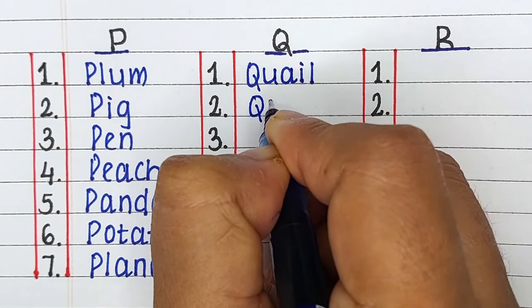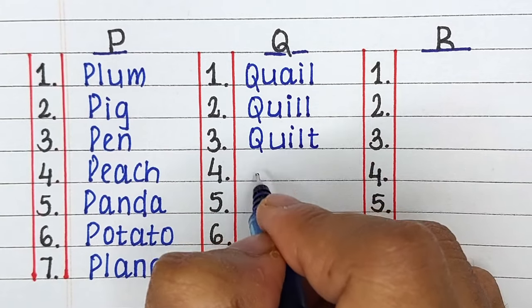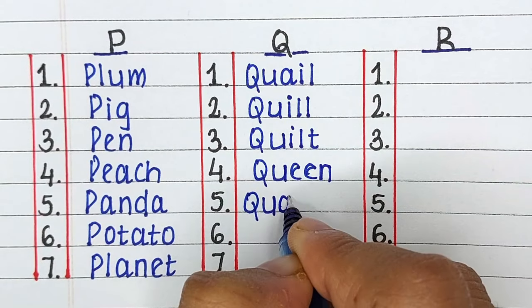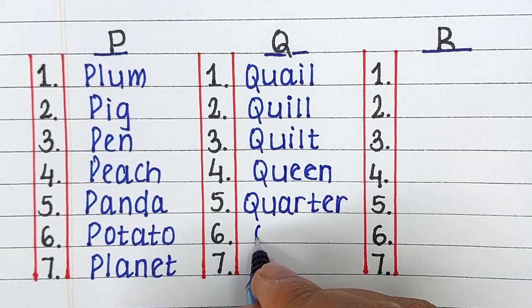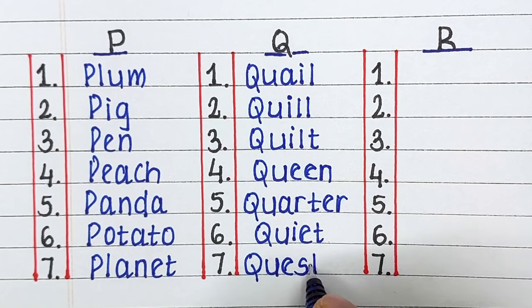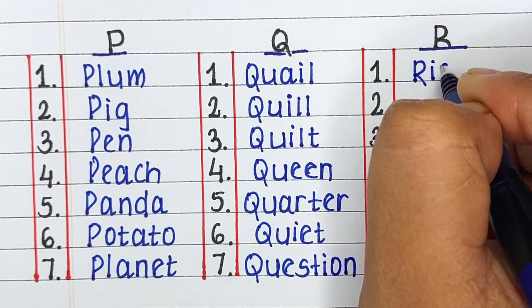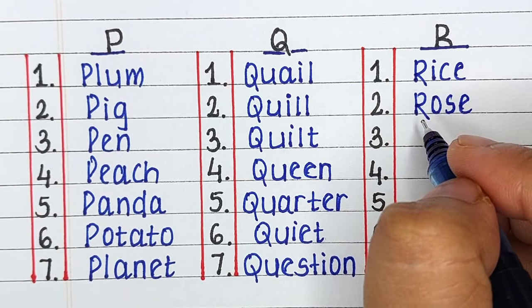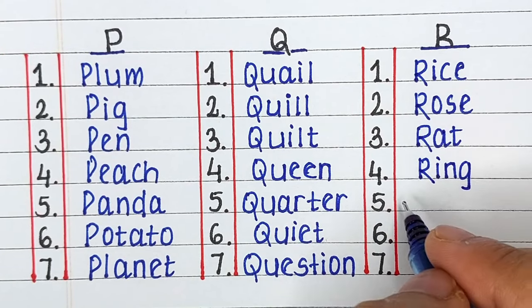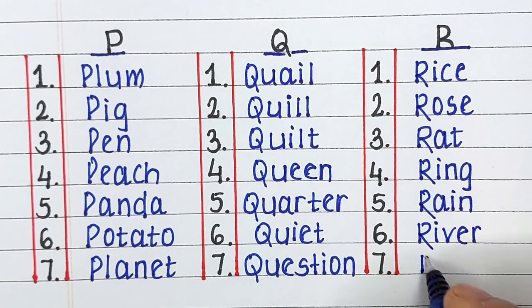Next up we have Alphabet Q. The words starting from letter Q are Quill, Quilt, Queen, Quarter, Quiet and Question. Next up we have Alphabet R. The words starting from letter R are Rice, Rose, Rat, Ring, Rain, River and Robot.